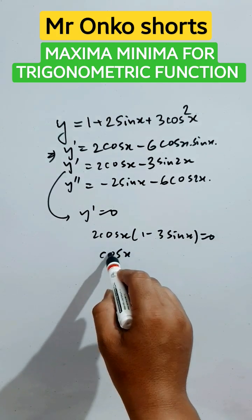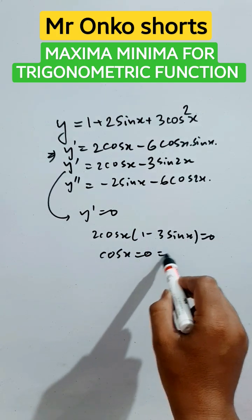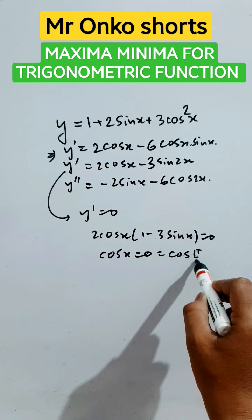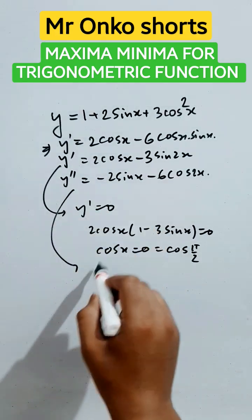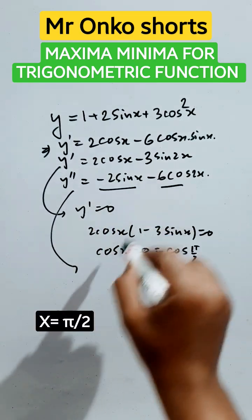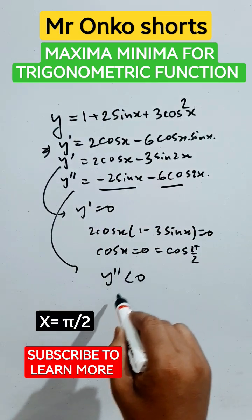So either cos x equals 0 or this will be equal to 0. For this, cos(π/2) = 0, x = π/2. Now put x = π/2, it will be negative, so y double dash is negative, so max value.